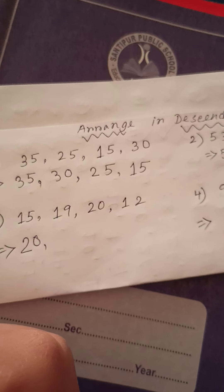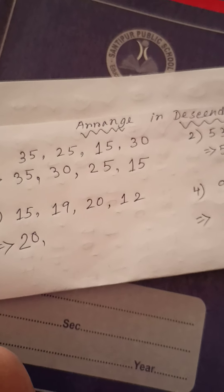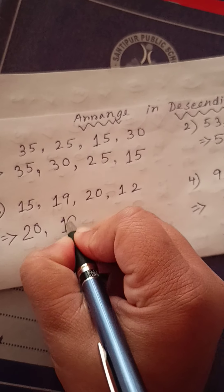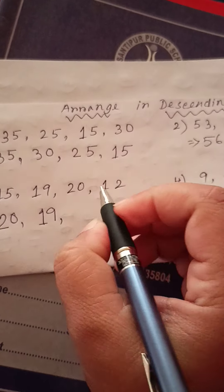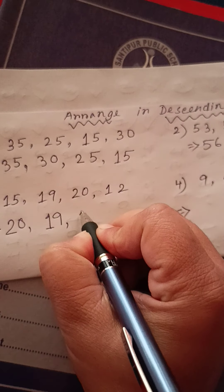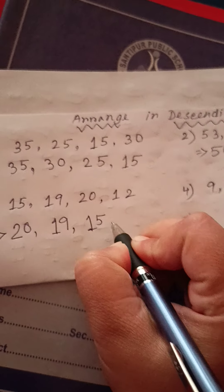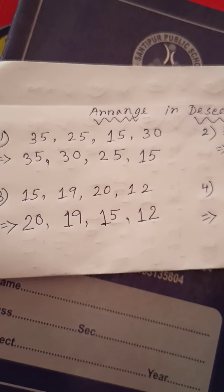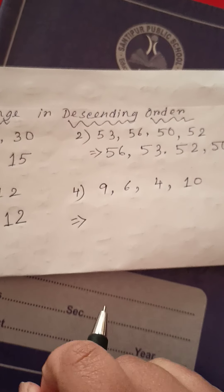Okay. Now, tell me children. Next. Which number will come? Yes. 19. 19. After 15. Then, 12. So, 20 is the biggest and 12 is the smallest number. Next.